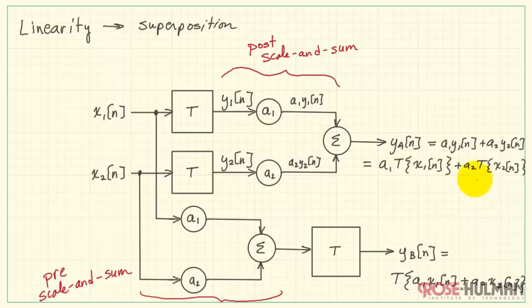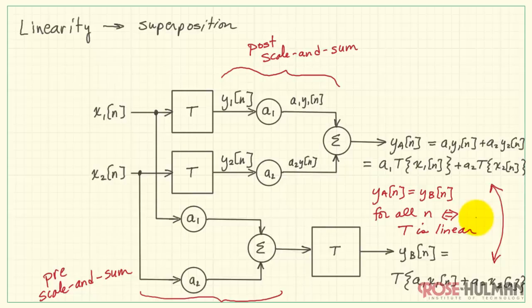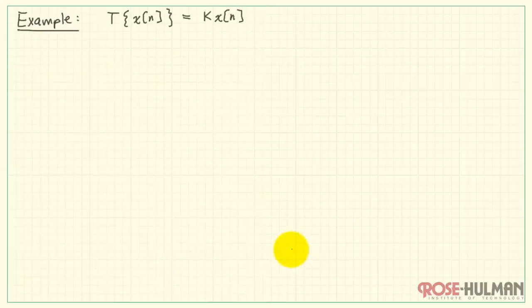The question then is whether or not these two versions are the same for all n. If so, then the system T is linear. This is biconditional. T being linear means that ya equals yb for all n.